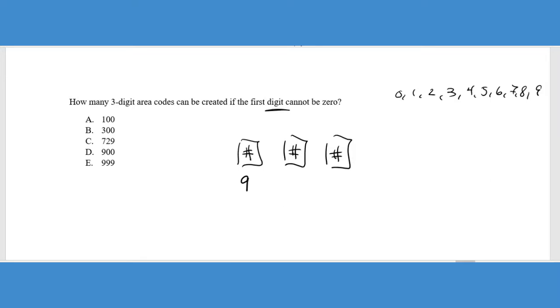Now it didn't say anything about not being able to repeat the numbers. So what happens is you can use all 10 digits for the remaining numbers in this area code. And of course, this is a fundamental counting principle problem. We are going to multiply these together, giving us a total of 900, which would be answer choice D.